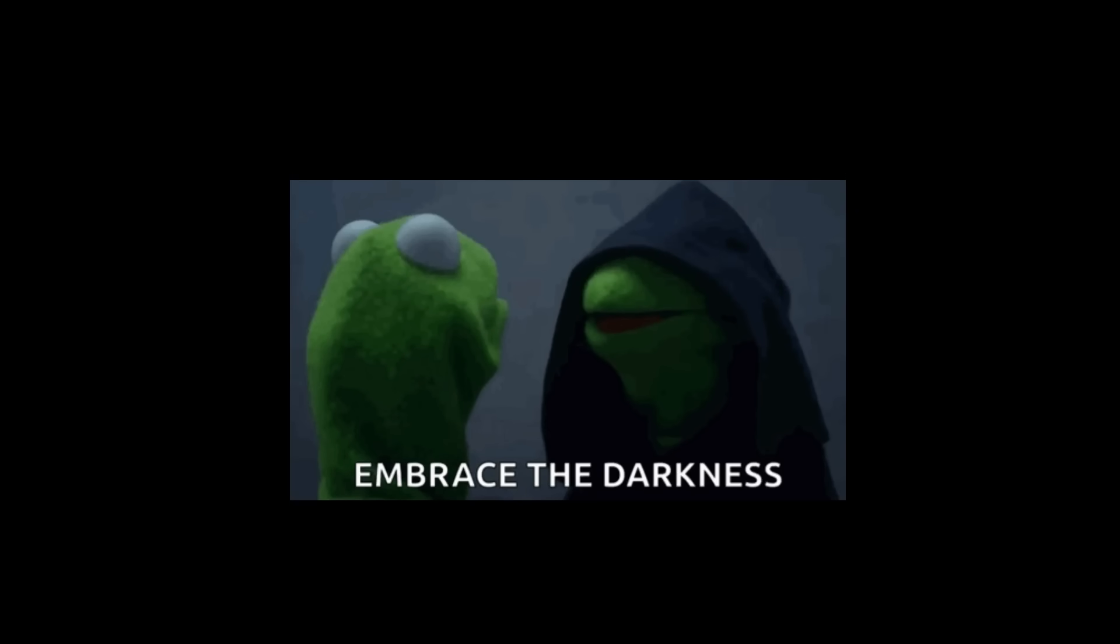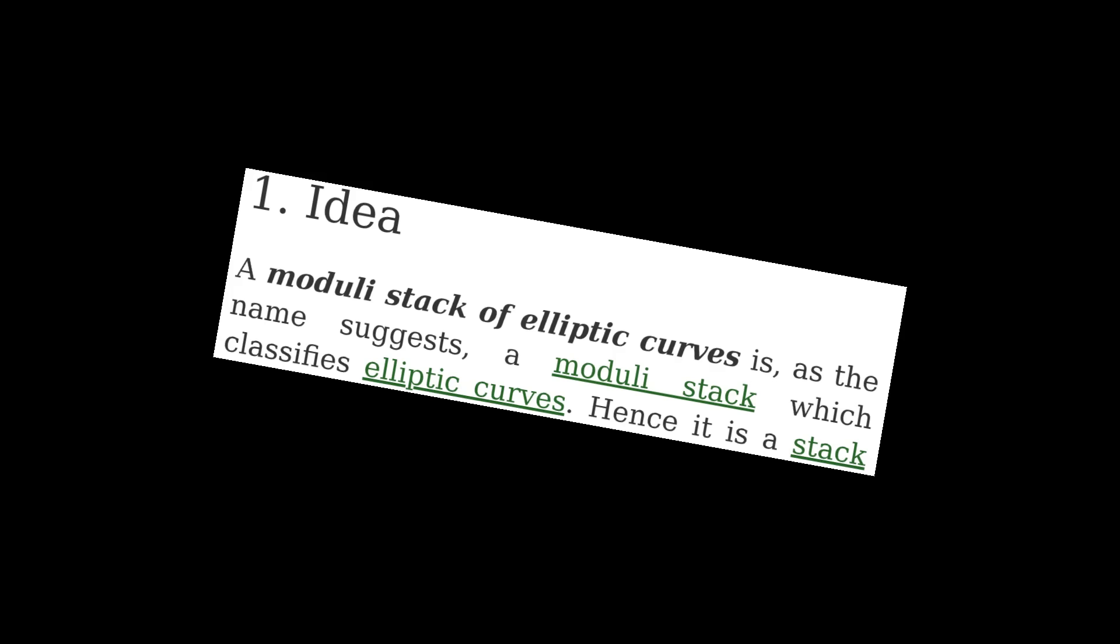Once you really internalize the Yoneda Lemma, you'll notice a lot of conceptually opaque categorical constructions start to make a whole lot more sense. Before you know it, you'll start converting theorems into definitions and conjuring up completely non-existent objects that give you real insights into concrete classical objects that you otherwise never would have understood.